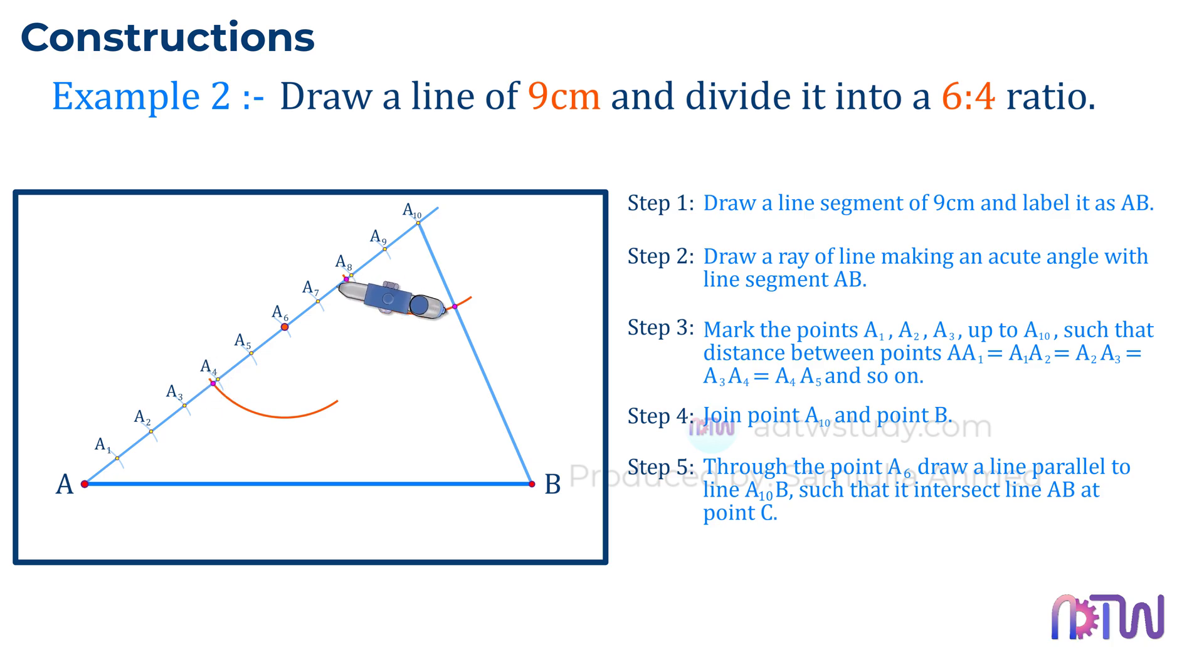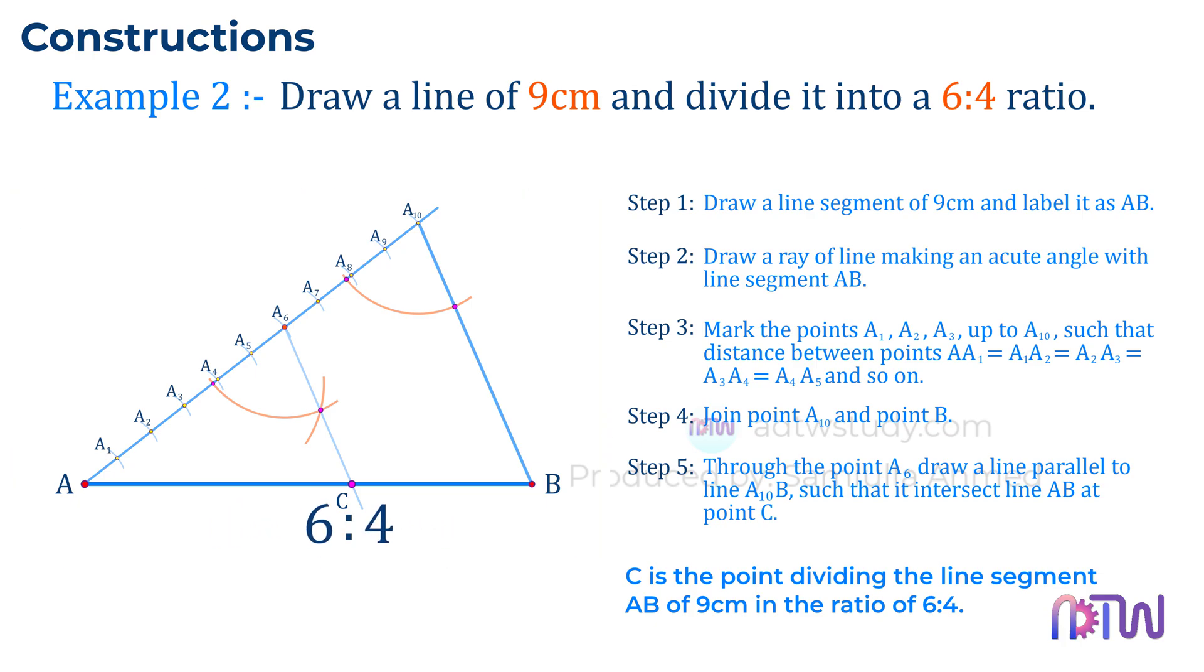Step 5: Through the point A6, draw a line parallel to line A10-B such that it intersects line AB at point C. C is the point dividing the line segment AB of 9 centimeters in the ratio of 6 to 4. And that's how you can divide a line segment into the required ratio.